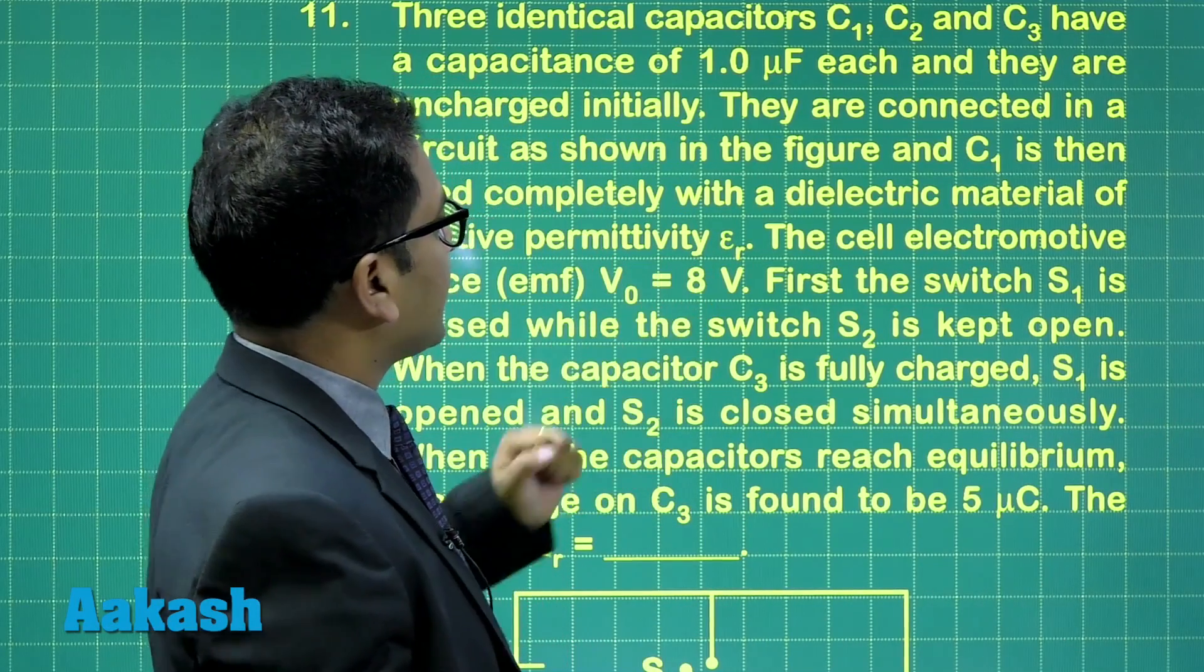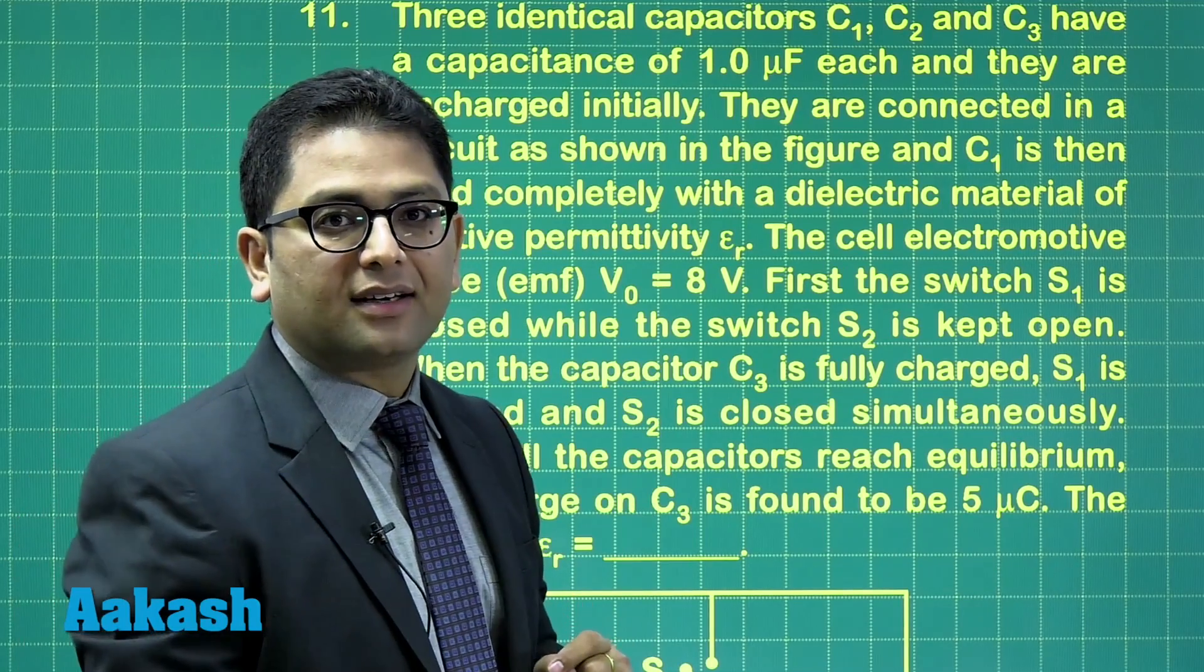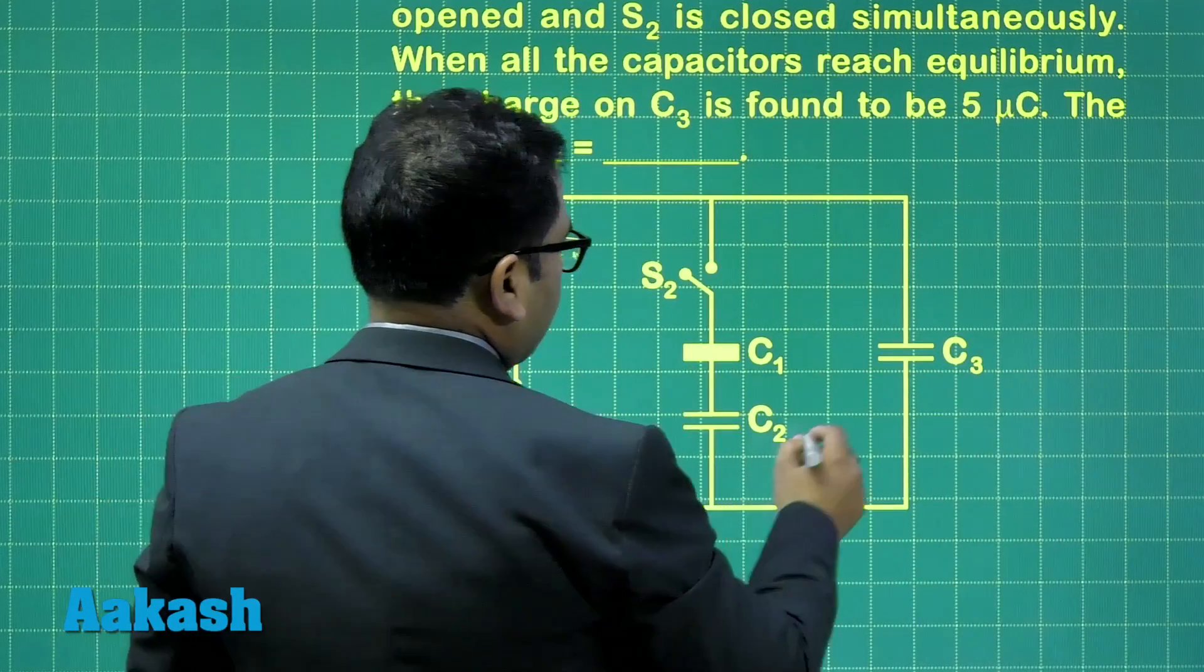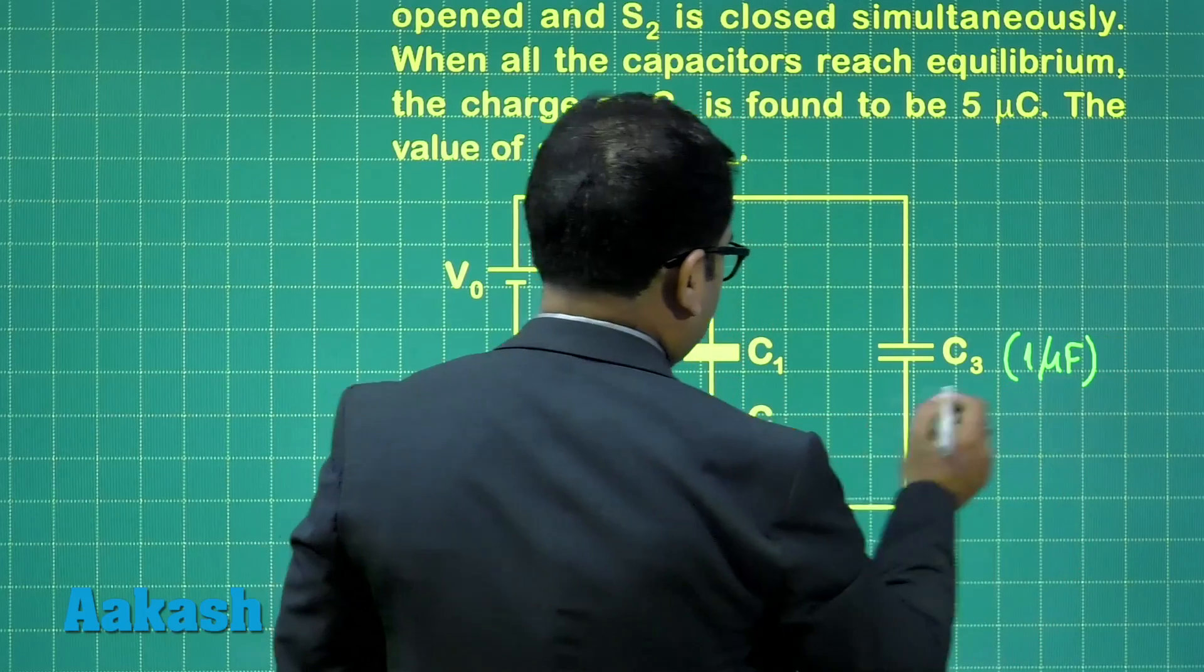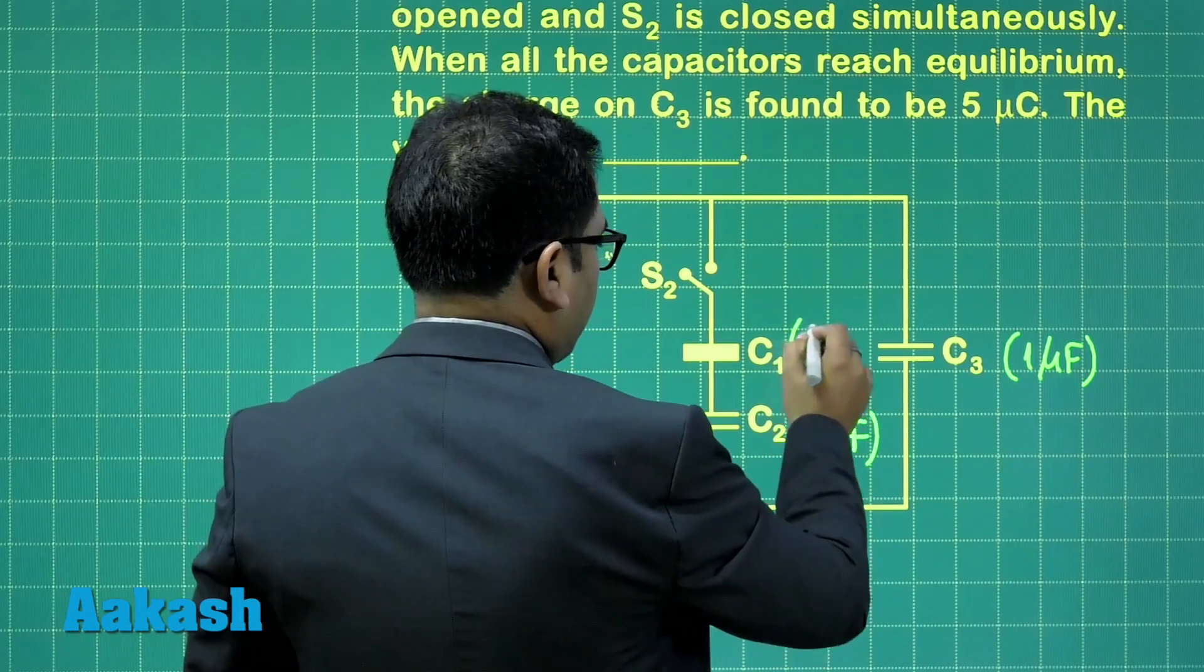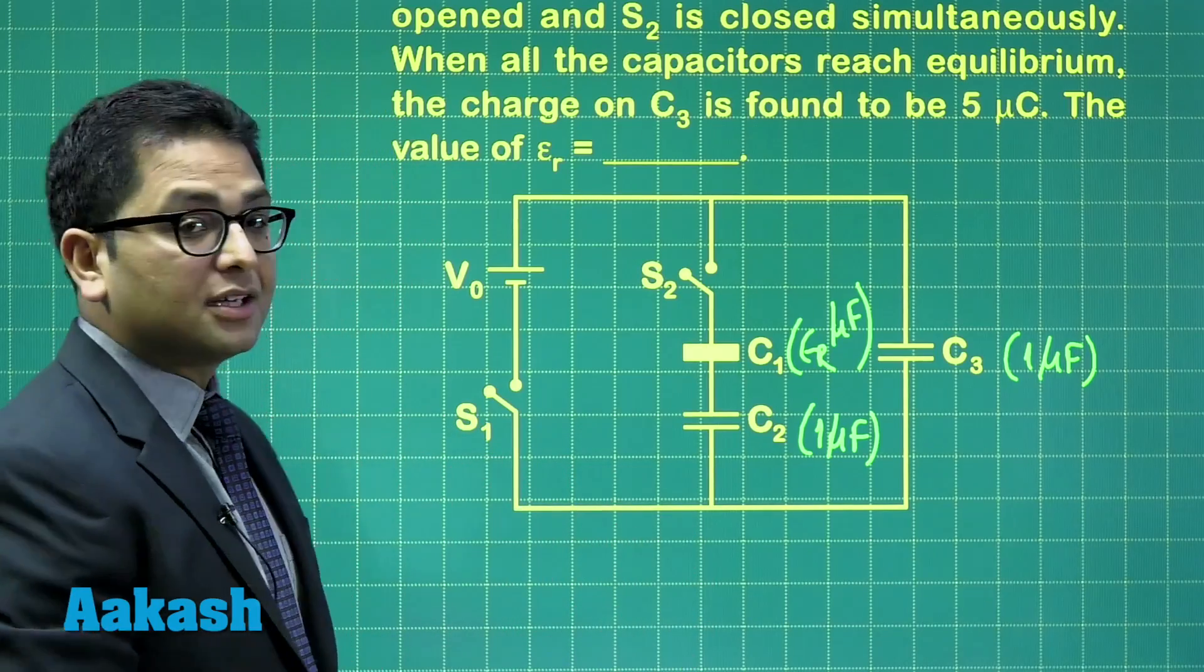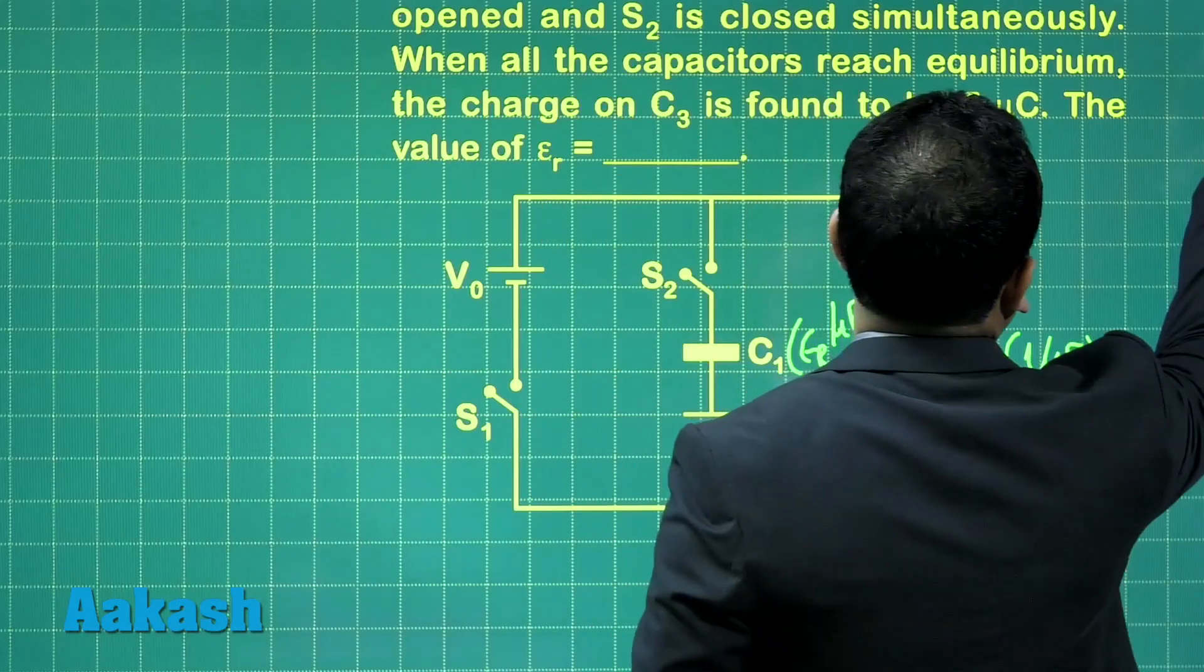C1 is then filled completely with a dielectric material of relative permittivity, epsilon r. In other words, after having done this particular operation, what would happen is, this capacitance would be 1 microfarad, this would be 1 microfarad, and this will be epsilon r microfarad, the reason being, you have to multiply it by the relative permittivity. So here is that given situation.